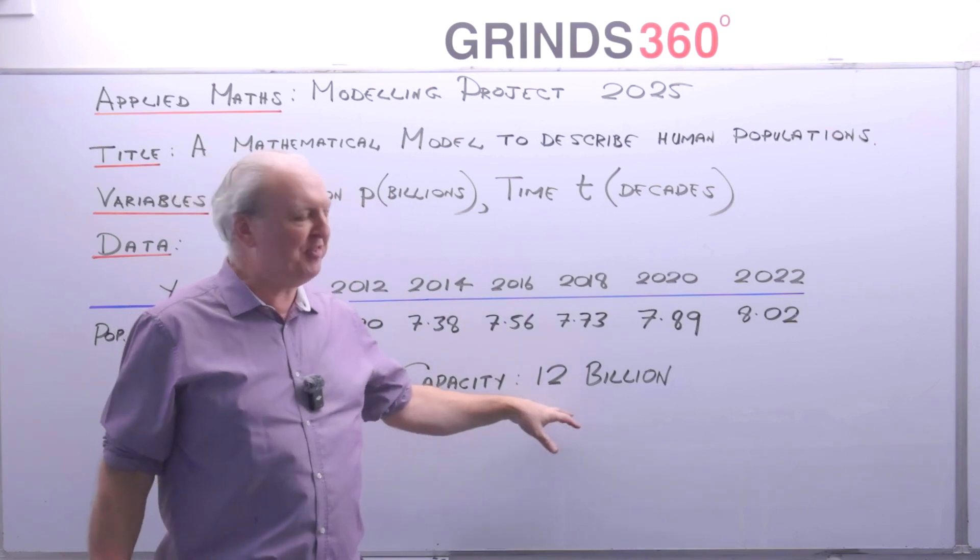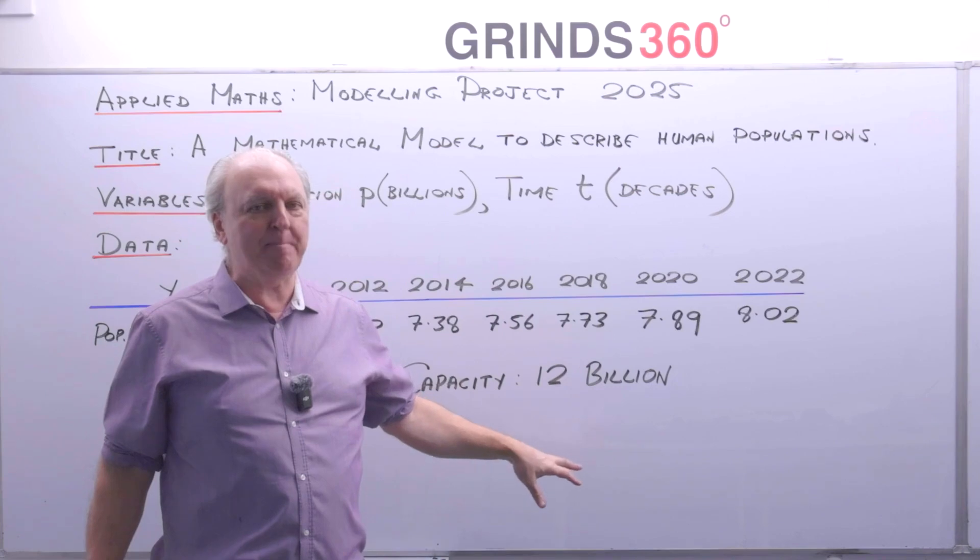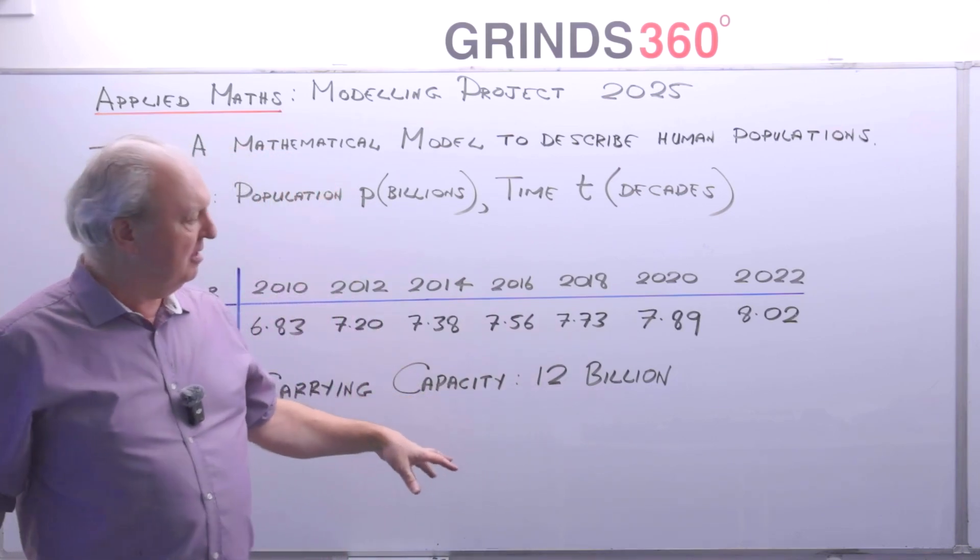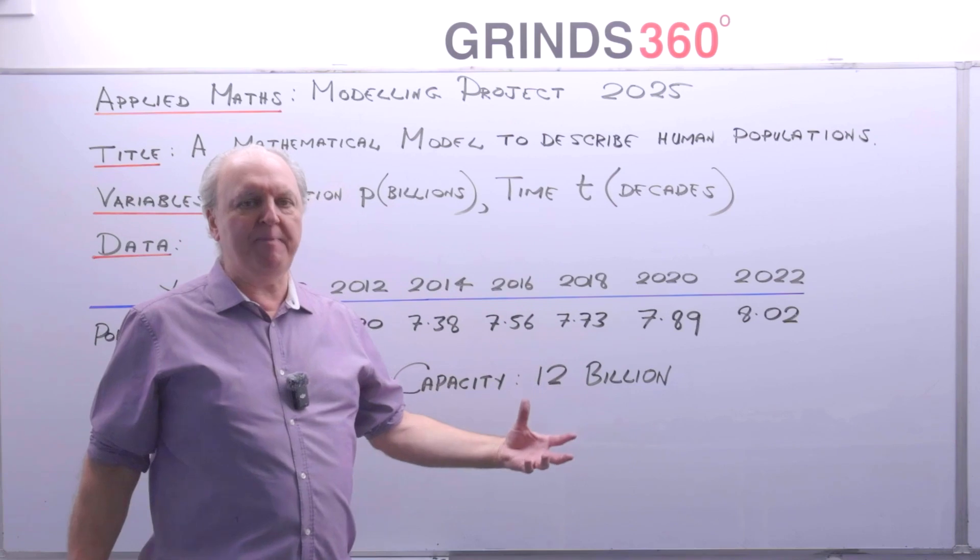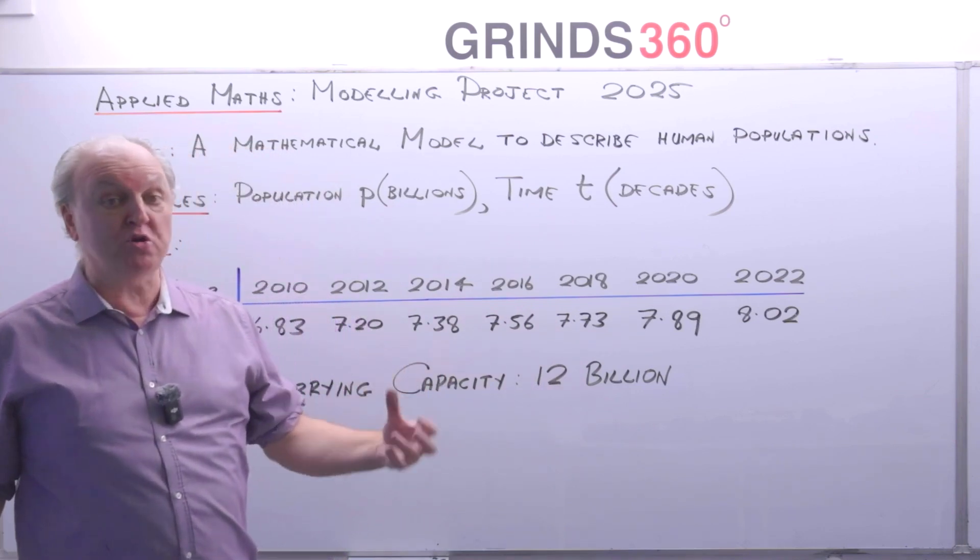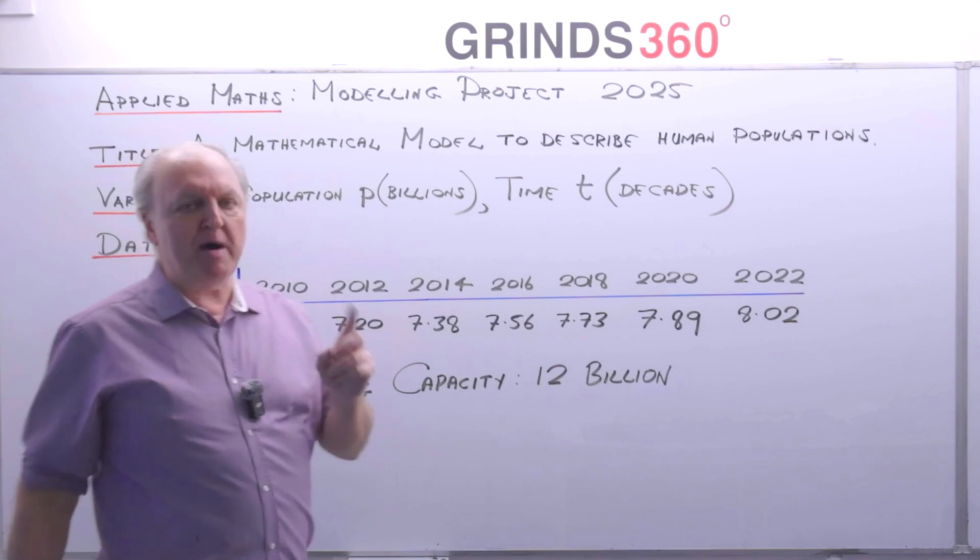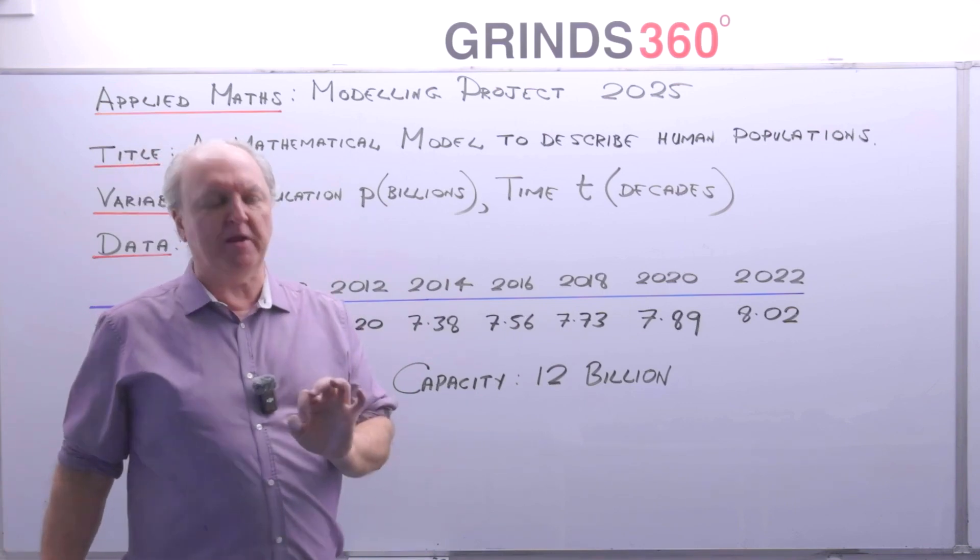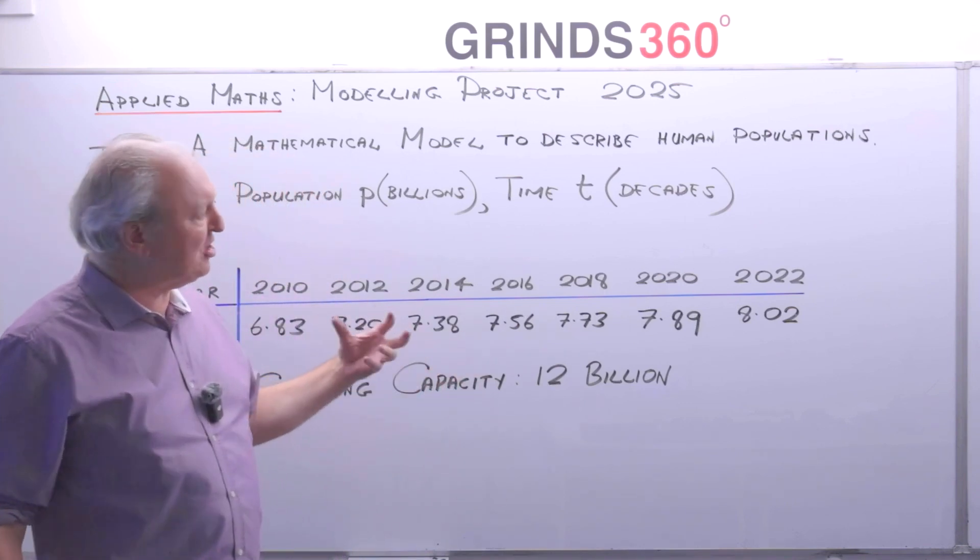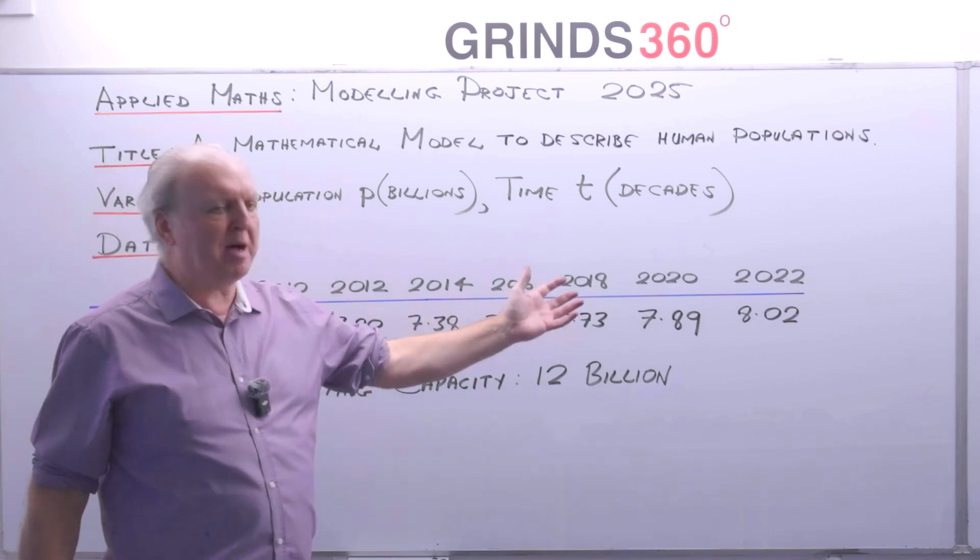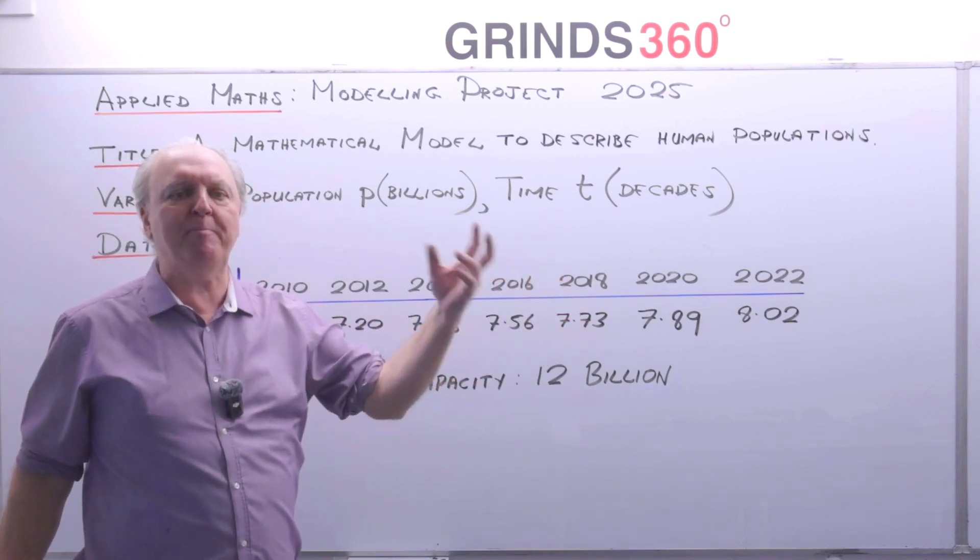In other words what we're saying with that is that's probably the maximum population that can live on the earth. Because if it goes beyond that there's going to be scarcity of water, space, food and so on. So let me describe model one for you. It's a very simple model which I want to get some kind of mathematical formula that will describe that population and predict the population in the future.